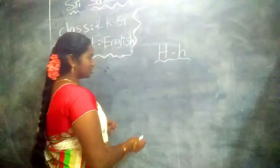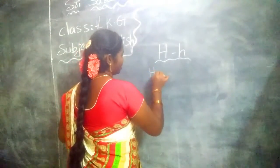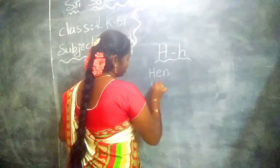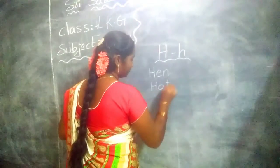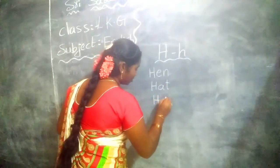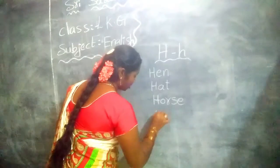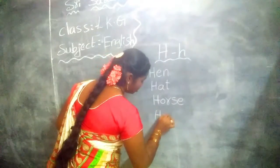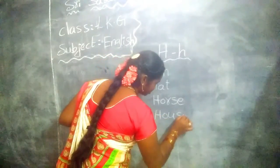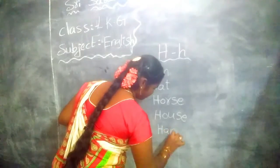We will see the words. H-E-N — hen. H-A-T — hat. H-O — H-O-U-S-E — house. H-A-N — hand.